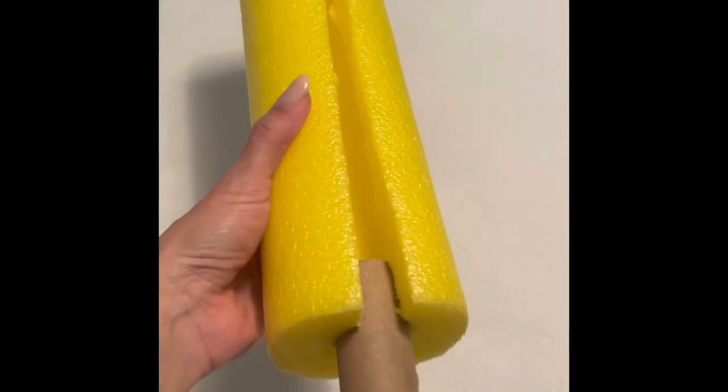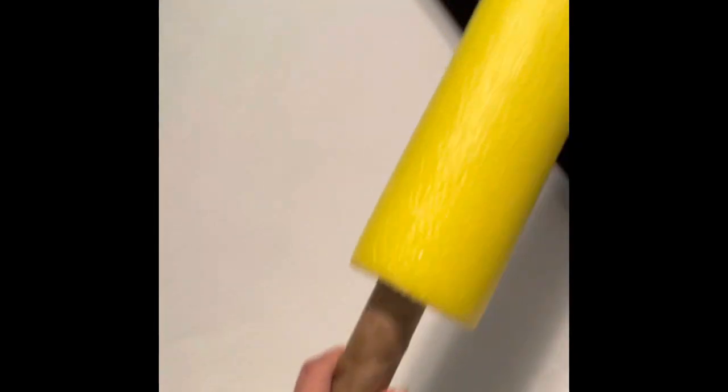And all you have to do is get a pool noodle and insert one of those paper towel leftover cartons and just use it as a sword.